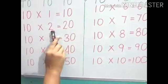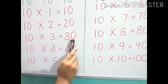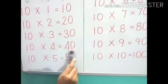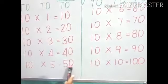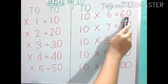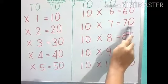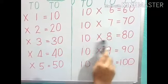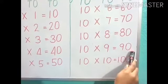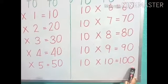So let's recap again. Table of 10: 10, 1s are 10. 10, 2s are 20. 10, 3s are 30. 10, 4s are 40. 10, 5s are 50. 10, 6s are 60. 10, 7s are 70. 10, 8s are 80. 10, 9s are 90. 10, 10s are 100.